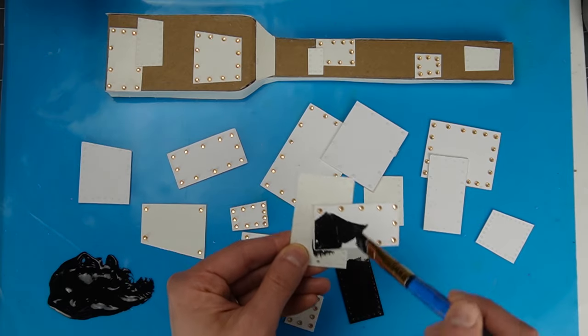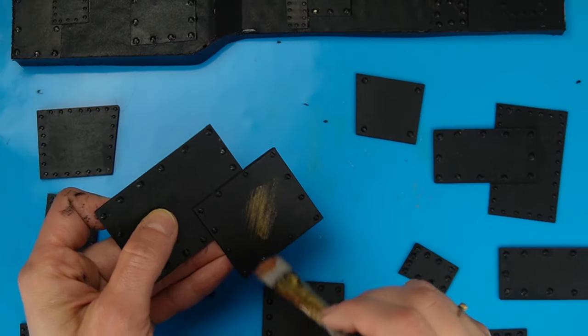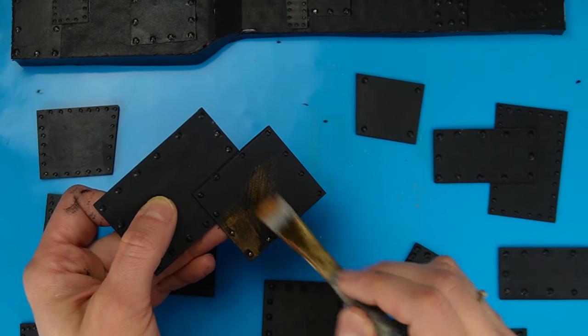I mixed some PVA glue into black acrylic paint and gave everything a base coat. Silver, aztec gold, gold, and black will make up the color palette for painting the panels.